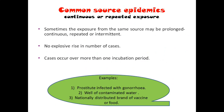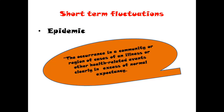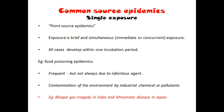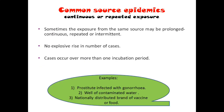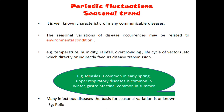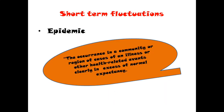So what we have seen is the types of epidemics — it was under time distribution, short-term fluctuation — epidemics classified as common source, propagated, and slow epidemics. Under common source: the Bhopal gas tragedy and food poisoning for single exposure, and continuous or repeated exposure like a well of contaminated water. Then periodic fluctuation comes in between the descriptive epidemics, and epidemic is a commonly asked question so you need to know it in detail.